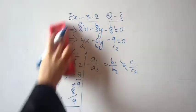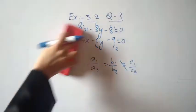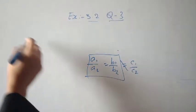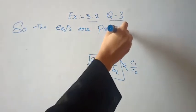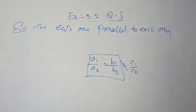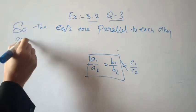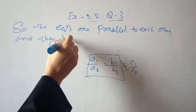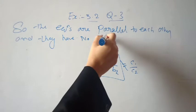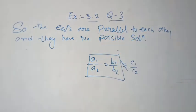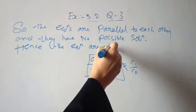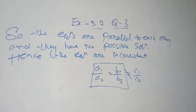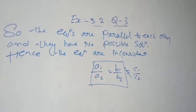Since a1/a2 equals b1/b2 but not c1/c2, the given equations are parallel to each other. There is no possible solution. Therefore, the given lines are inconsistent.